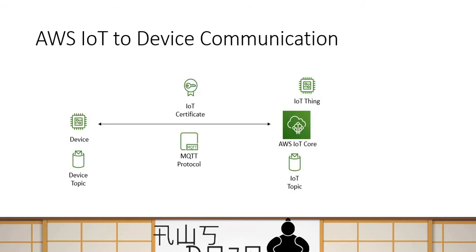If you look at this diagram, it explains how device-to-IoT Core communication works. Suppose this is your device, which could be any kind of sensor. First, you have to register this device to AWS IoT Core as a thing. Once you register the device as a thing, it generates IoT certificates — these are X.509 certificates — and these certificates are used by the device to authenticate to AWS IoT Core.